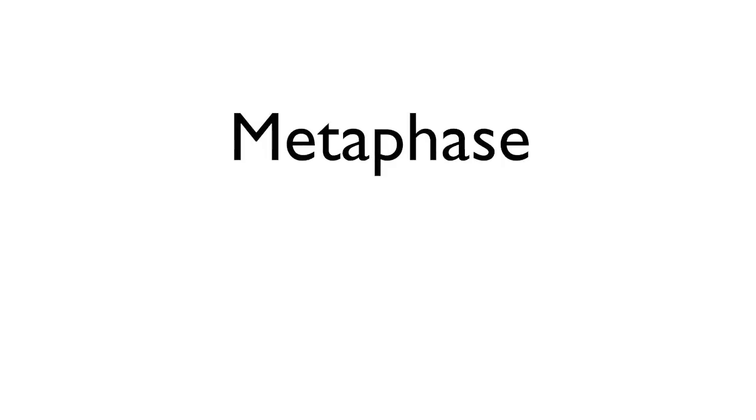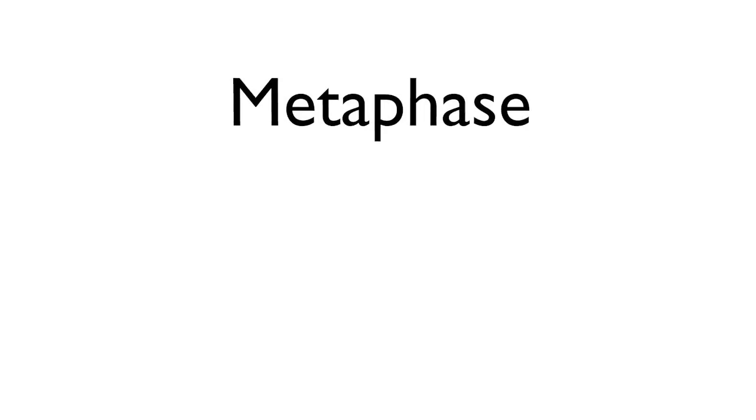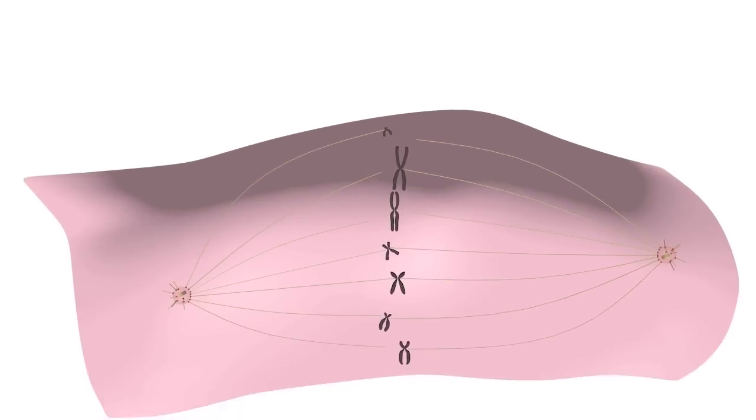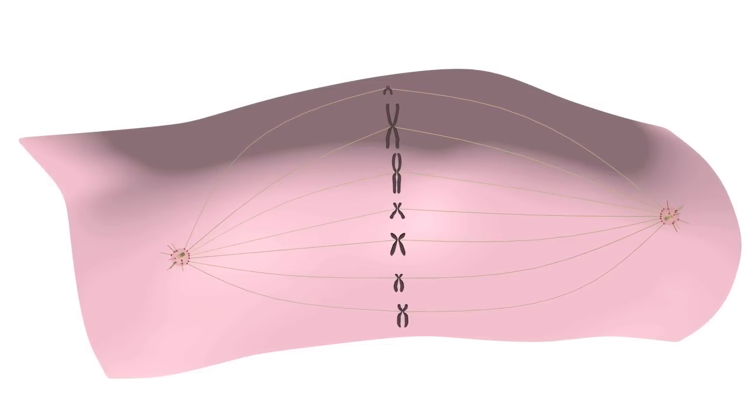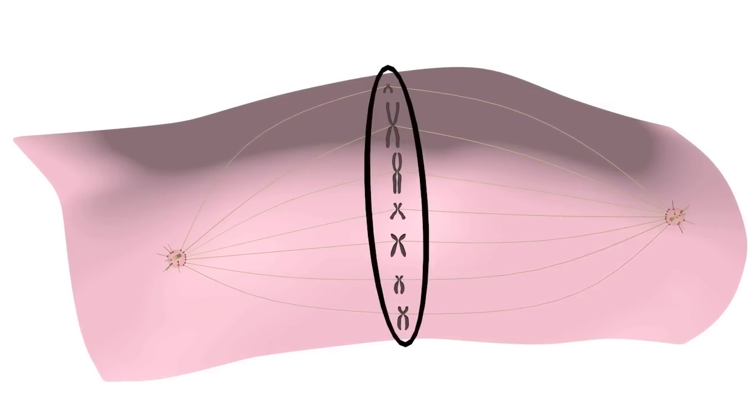When chromosomes bi-orient, they are subjected to equivalent pulling forces from either side of the spindle. As a result, the bi-oriented chromosomes align on the spindle mid-zone in a conformation known as the metaphase plate.